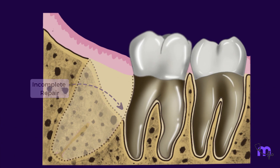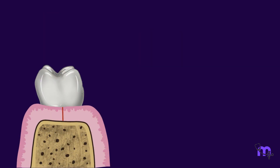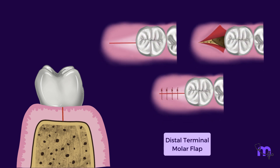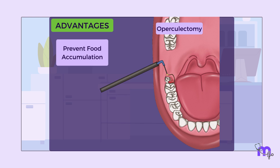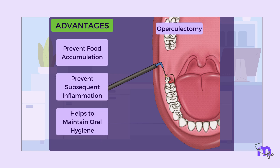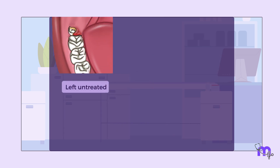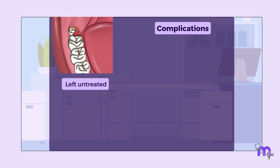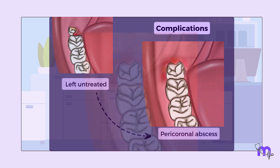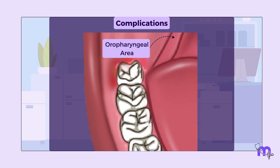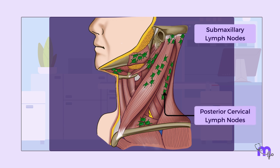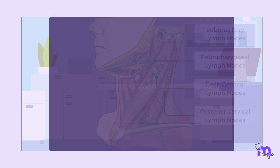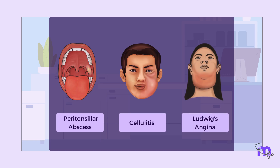If incomplete repair takes place after the extraction of impacted third molars, bony defects may occur; the flap technique used to access these defects is the distal terminal molar flap. In cases where retention of the tooth is an option, excision of the operculum can be considered — a procedure called operculectomy — which aids in preventing food accumulation and subsequent inflammation. If pericoronitis is left untreated, it could result in a pericoronal abscess, spread into the oropharyngeal area, or medially to the base of the tongue. The submaxillary, posterior cervical, deep cervical, and retropharyngeal lymph nodes may be involved, and infrequent complications include peritonsillar abscess, cellulitis, and Ludwig's angina.